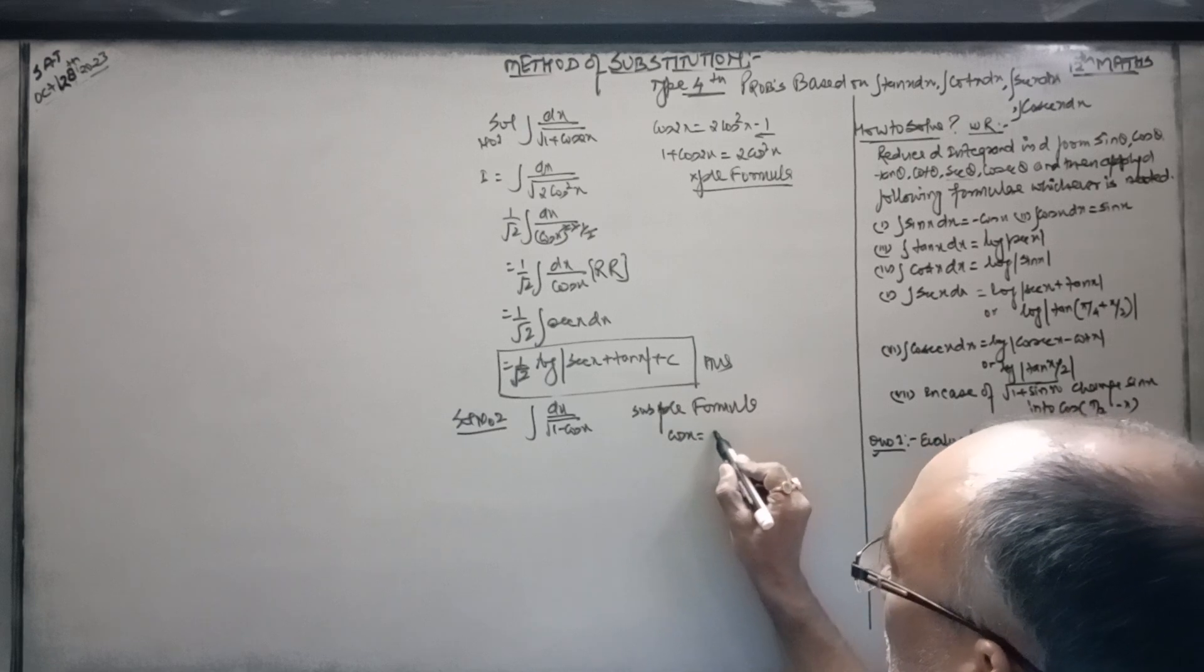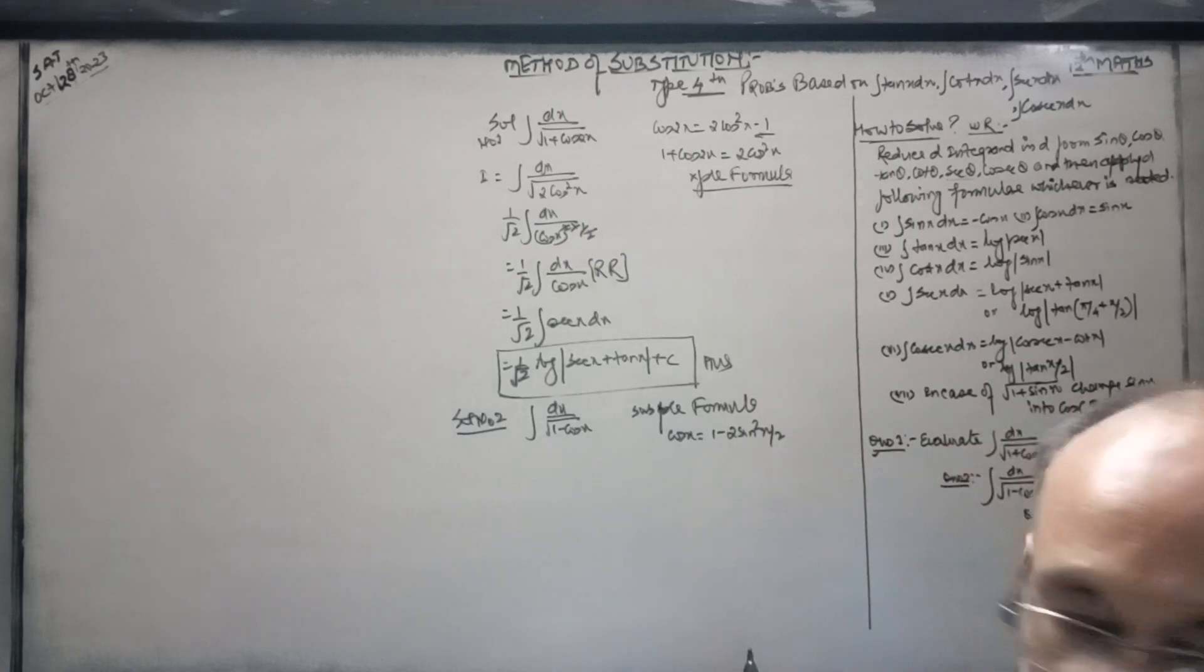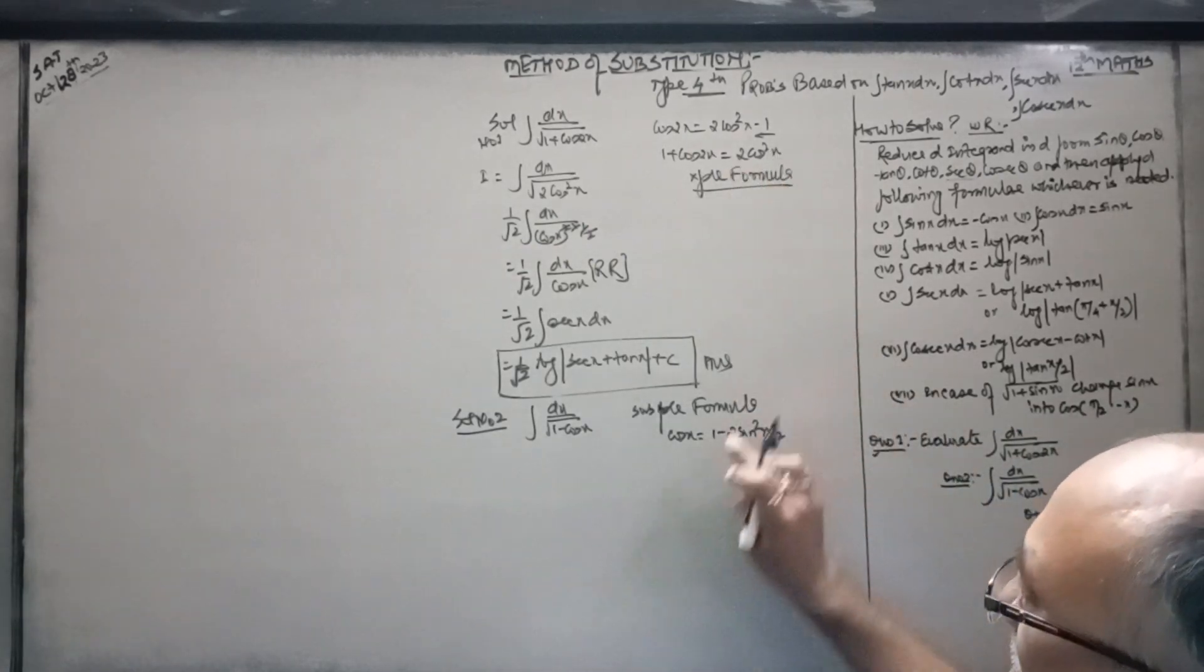Cos x is equal to 1 minus 2 sin square x by 2. And this is the sum of multiplication.